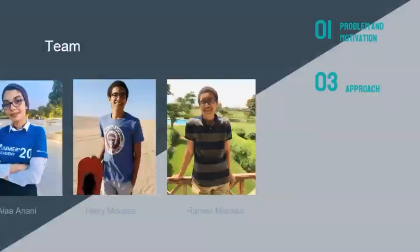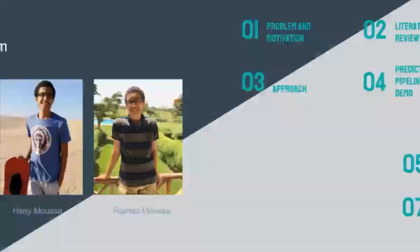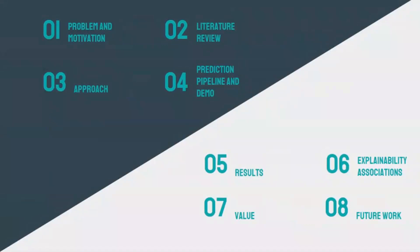The outline for the presentation proceeds as follows. We firstly describe the problem and the motivation behind our proposed solution, providing a literature review for previous approaches tackling the problem. We also describe our own solution in detail, as well as the prediction pipeline and a sample demonstration. We then present results from different experiments, look at the explainability outcome, and finally outline the values and future work proposals.